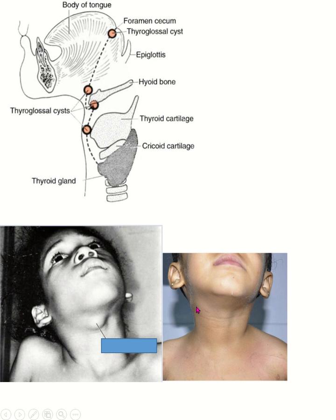A branchial cyst is never in the midline — it is always present laterally. Movement of the tongue does not cause it to move. It is always present laterally and moves with swallowing, not tongue movement.